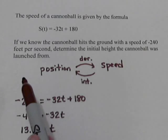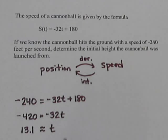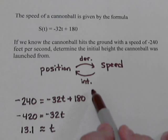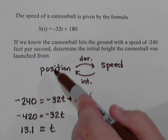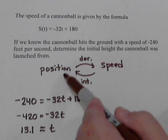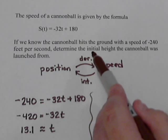Now notice that didn't answer the question. Determine the initial height the cannonball was launched from. That didn't give us the answer to that question, but we are going to need this piece in just a moment. So let's shift gears now, and let's see the initial height is related to the position. So we're going to need an equation for the position to answer that.